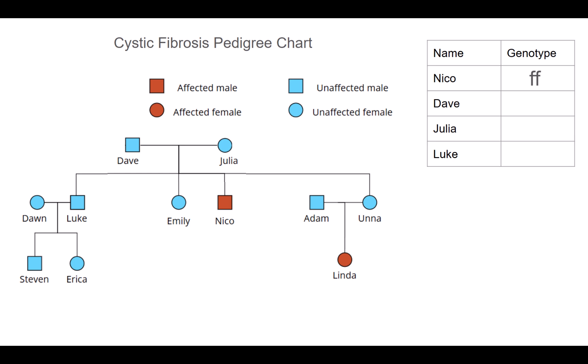Next is Dave, Niko's father. We know that Dave and Julia neither have cystic fibrosis, but they've had an offspring that does, which means that both of them must be carrying the recessive allele. And their other allele, because they're unaffected, must be the dominant one. So both Dave and Julia have to be heterozygous for cystic fibrosis.